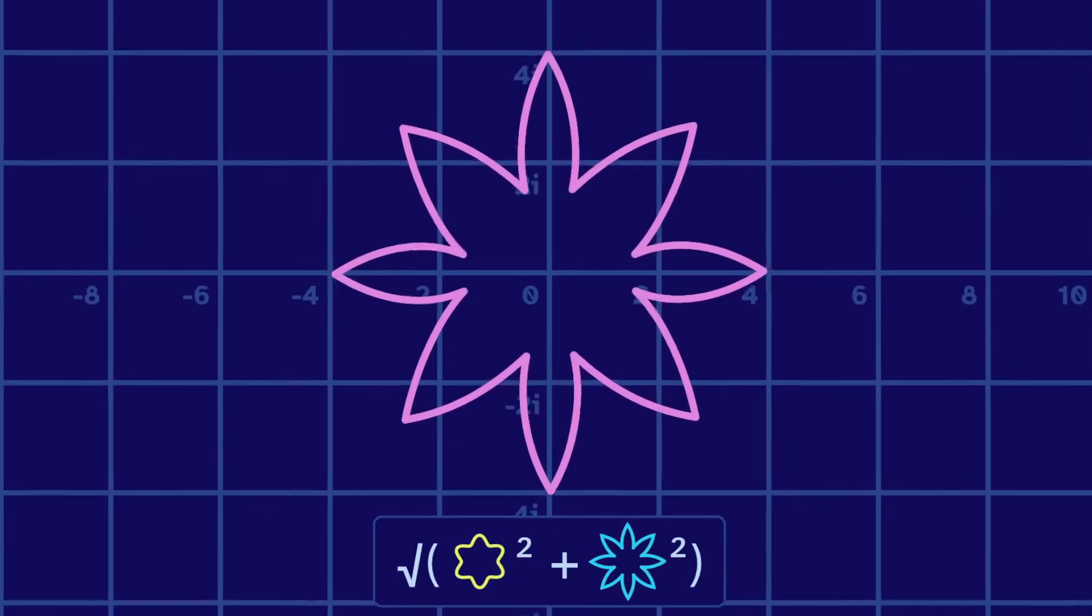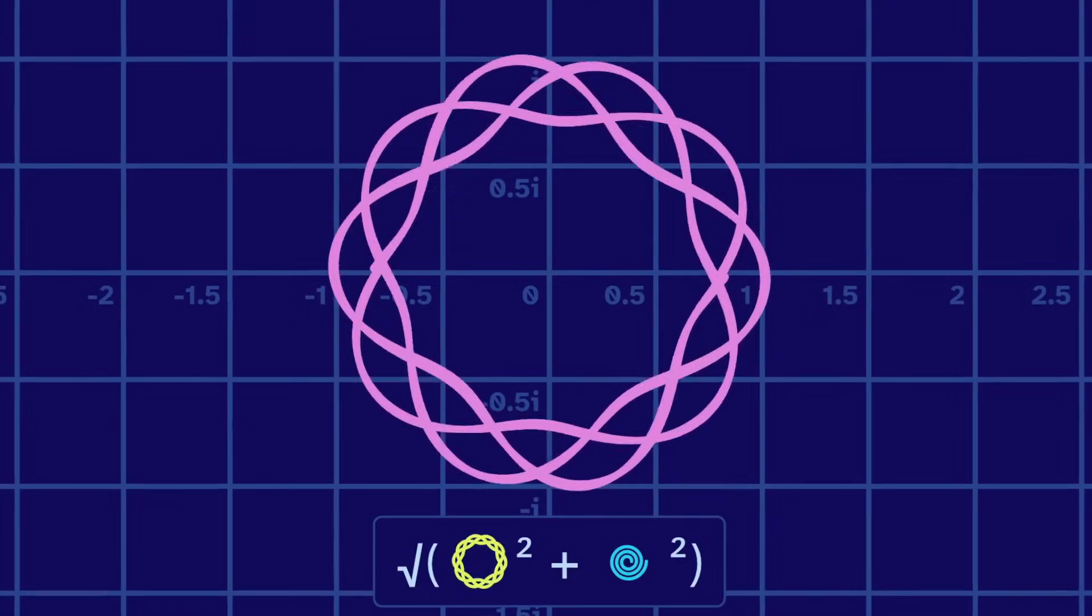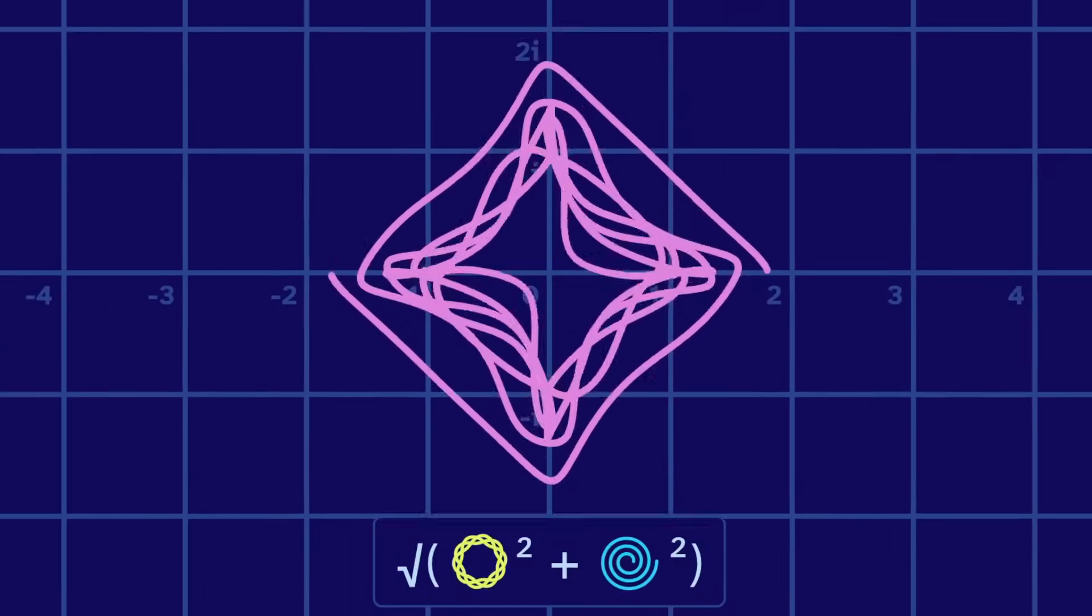When one input shape is bigger, it has much more influence on the output. So by varying the size, the output morphs between the two shapes.